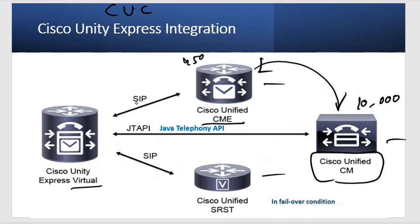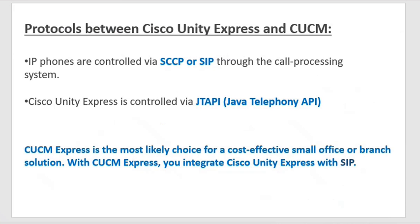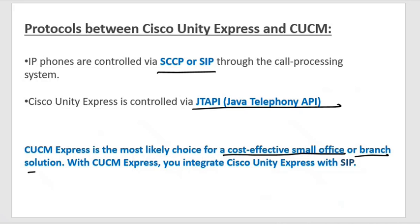Integration can be done using SIP, and the communication protocol used is JTAPI — Java Telephony API. SRST is used in case of failover conditions. Some protocols between Unity Express and CUCM for integration include JTAPI, the same as with Unity Connection. Unity Express is most likely the cost-effective choice for small office or branch solutions.